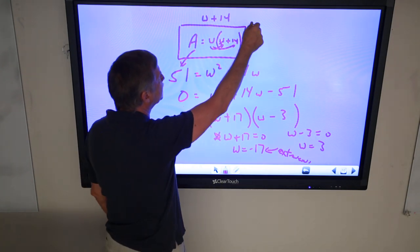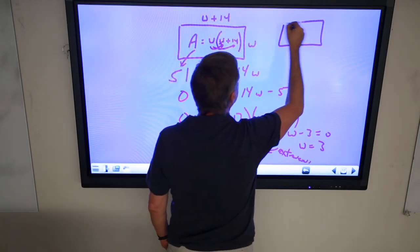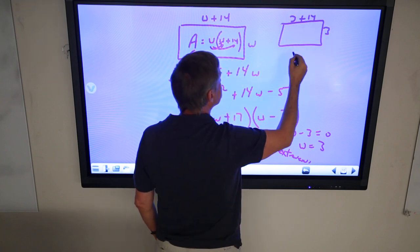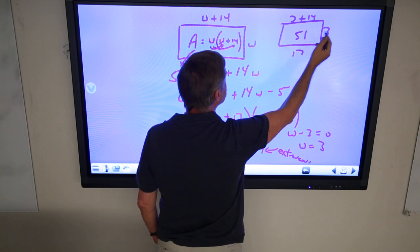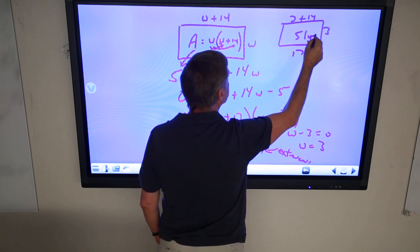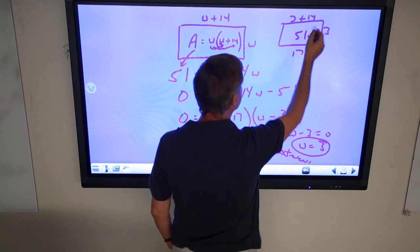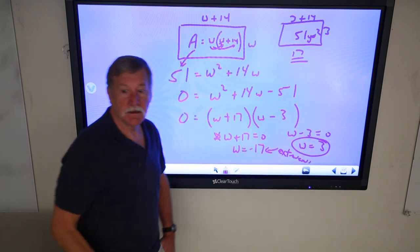So if I put in 3 here for W, alright, basically then I've got 3 plus 14 is 17, so that's 17 times 3. Length times width gives me an area of 51 square yards. So, the width is 3 and the length is 17 yards.